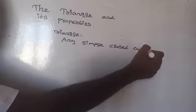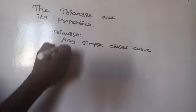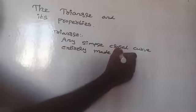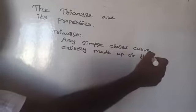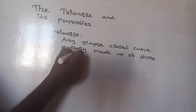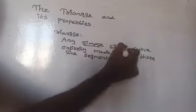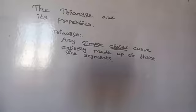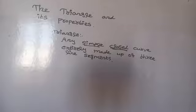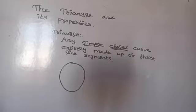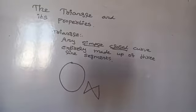Any simple closed curve is entirely made up of line segments. What is meant by a closed curve? A closed curve is one where the starting point and ending point are the same. Suppose this is a curve — if we start at a point and come back to the same starting point, that is the ending point, and it is called a closed curve.